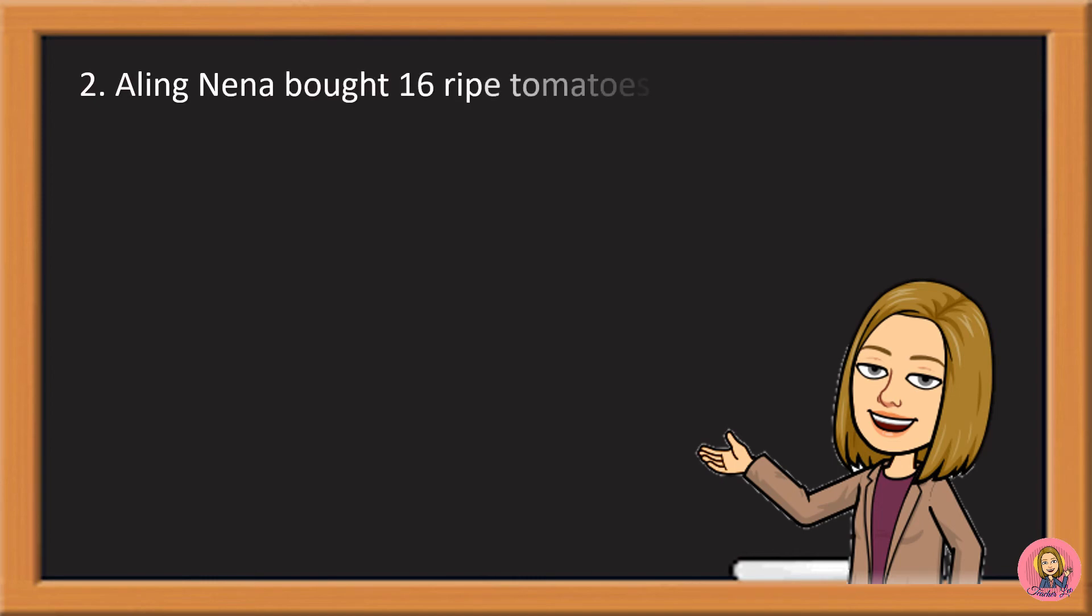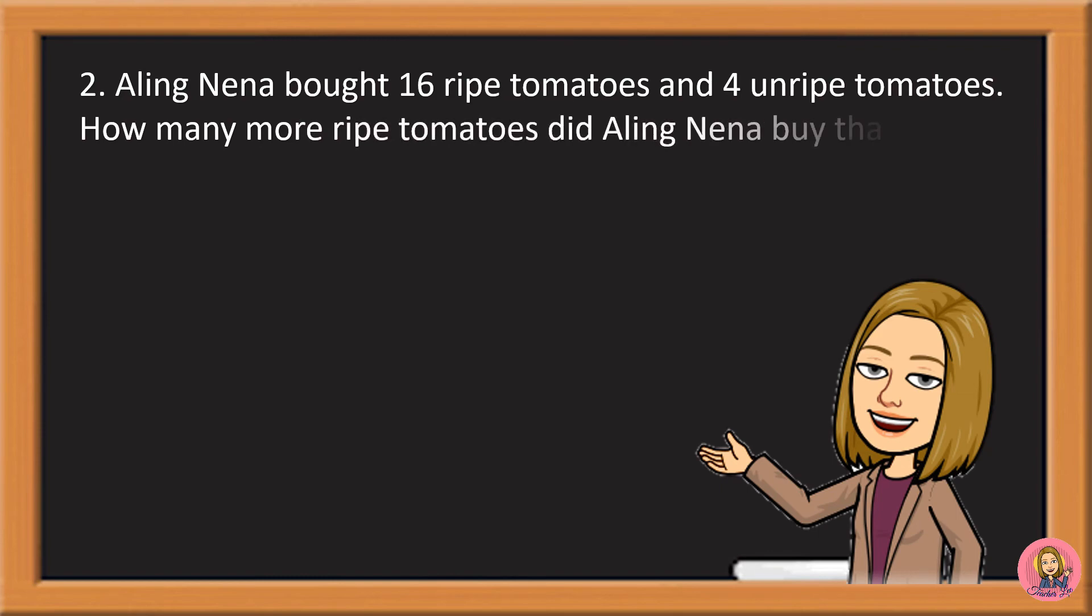Aling Nena bought 16 ripe tomatoes and 4 unripe tomatoes. How many more ripe tomatoes did Aling Nena buy than the unripe tomatoes?